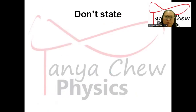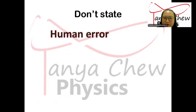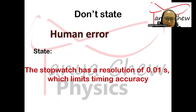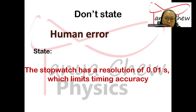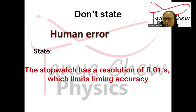Whenever you write your limitation, never ever state 'human error.' Instead, state something specific — for example, 'the stopwatch has a resolution or sensitivity of 0.01 seconds, which limits timing accuracy.' Don't you think that sounds more mature? Because when you state 'human error,' the examiner will wonder what kind of human error occurred. So you have to explain that human error specifically.